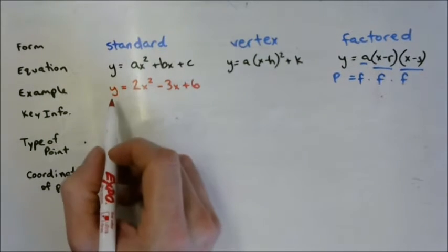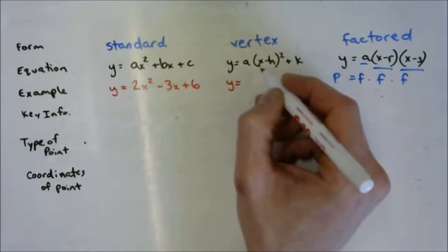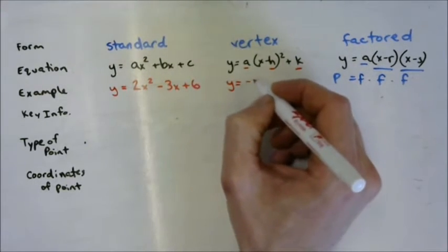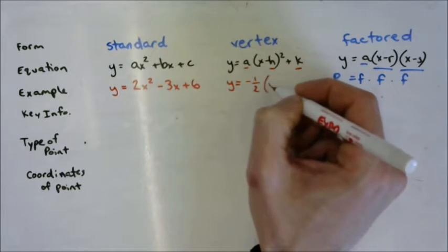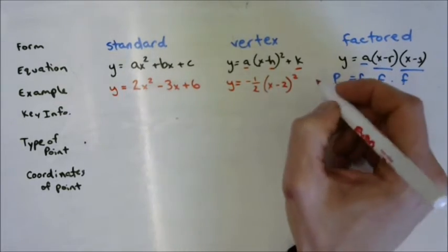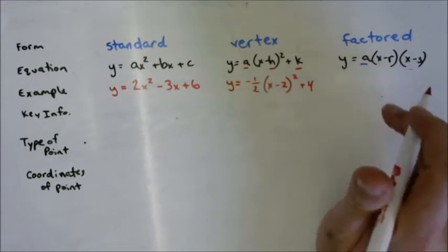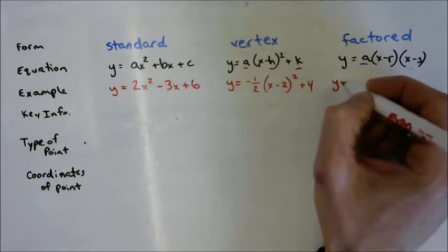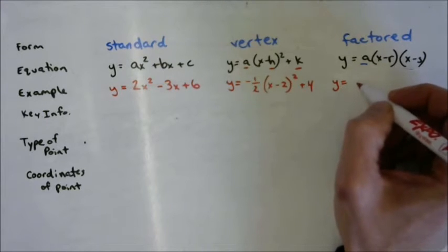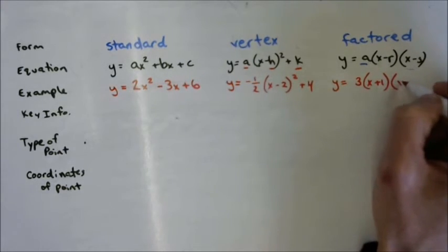Vertex form — same thing. Remember, it's always a relationship between y and x. The parameters a, h, and k are going to change. We'll make this one a little more complicated: negative one half, then in brackets x minus 2, close bracket, squared, plus 4. And in factored form, y on the left and x on the right: y equals (3x + 1)(x − 4).